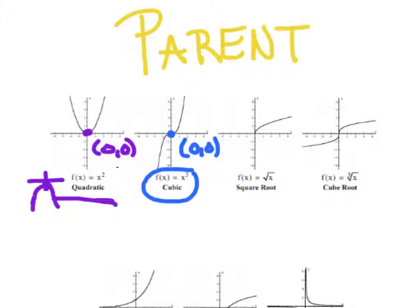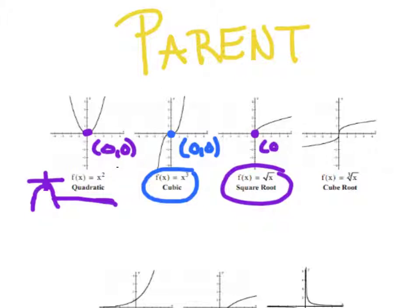Our square root function, y equals the square root of x. When in doubt, the nicest thing you could do is plug some points in if you're stuck. You cannot plug in a negative number, so that's why the graph does not extend to negative x values. The first nice number is zero — square root of zero is zero. Probably the next nice number is four — square root of four is two. Again, its main focus point is zero, zero.